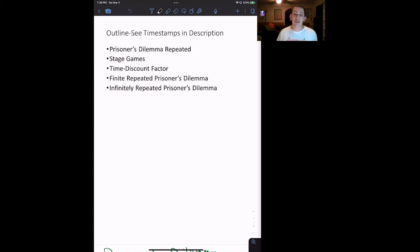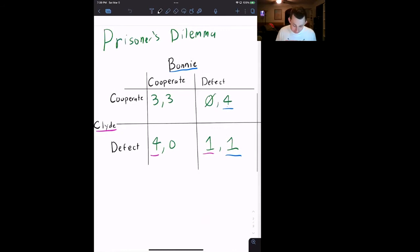Then we're going to use the prisoner's dilemma, both finitely repeated and infinitely repeated, to talk about how you can think about whether or not a strategy is a Nash equilibrium of an infinitely repeated game. Let's get into it. The timestamps are below if you'd like to jump around. Let's start by revisiting the prisoner's dilemma, which we saw in the pure strategy Nash equilibrium video. We've got Bonnie and Clyde, and here are the payoffs.